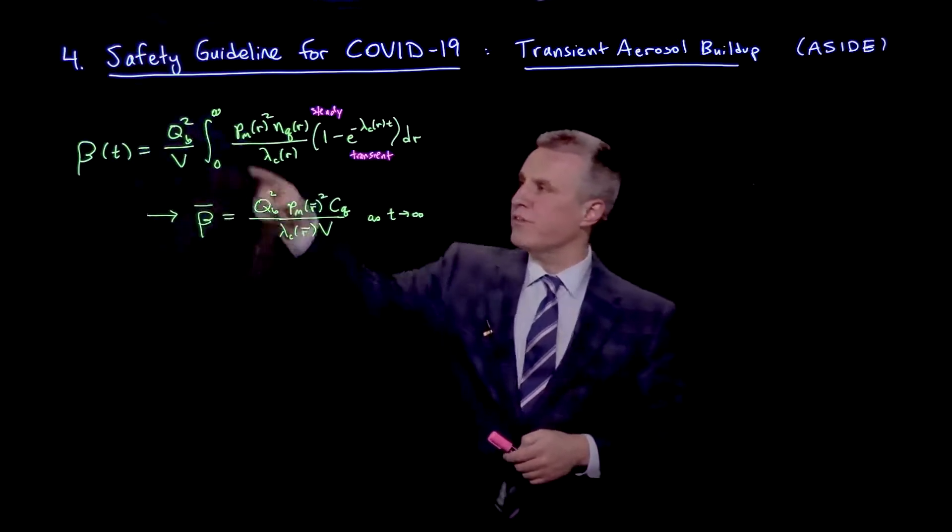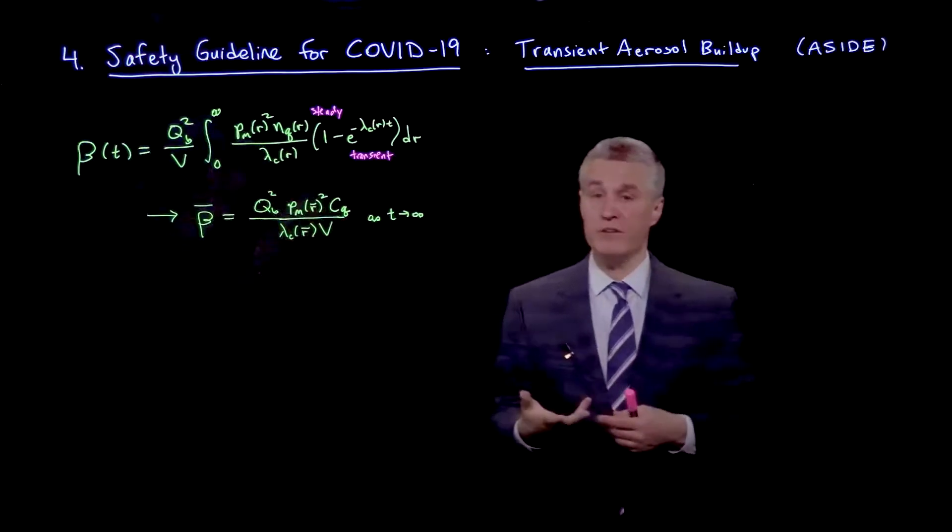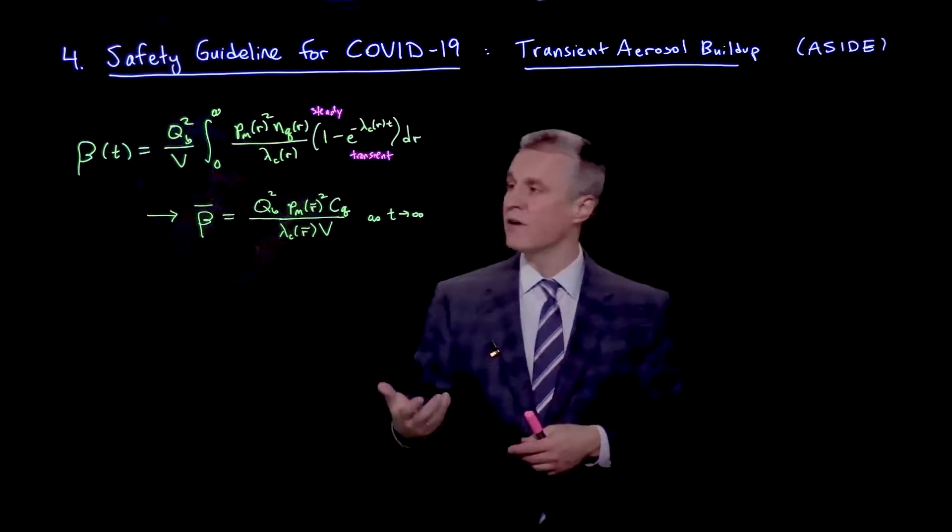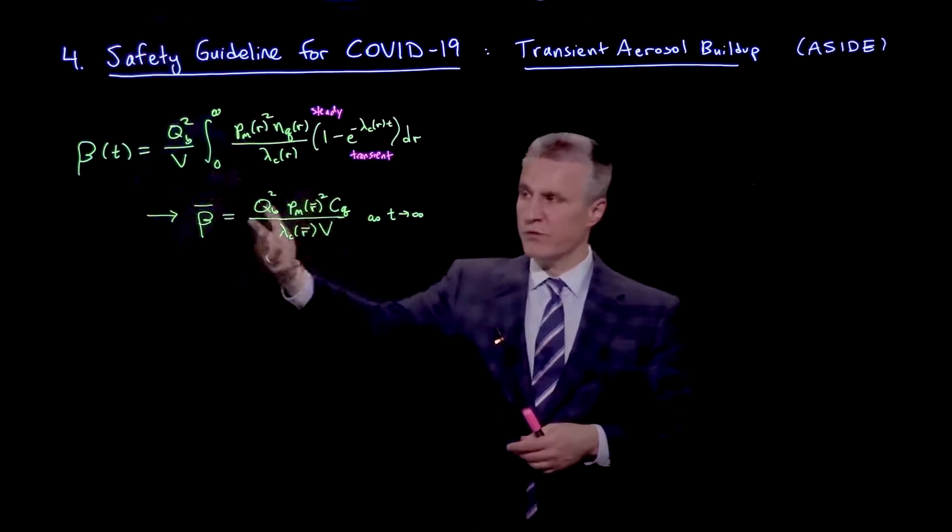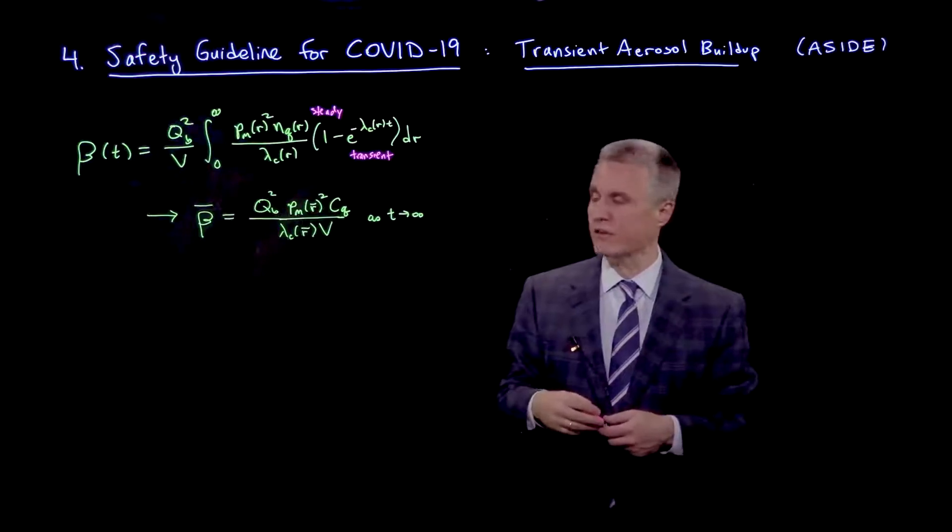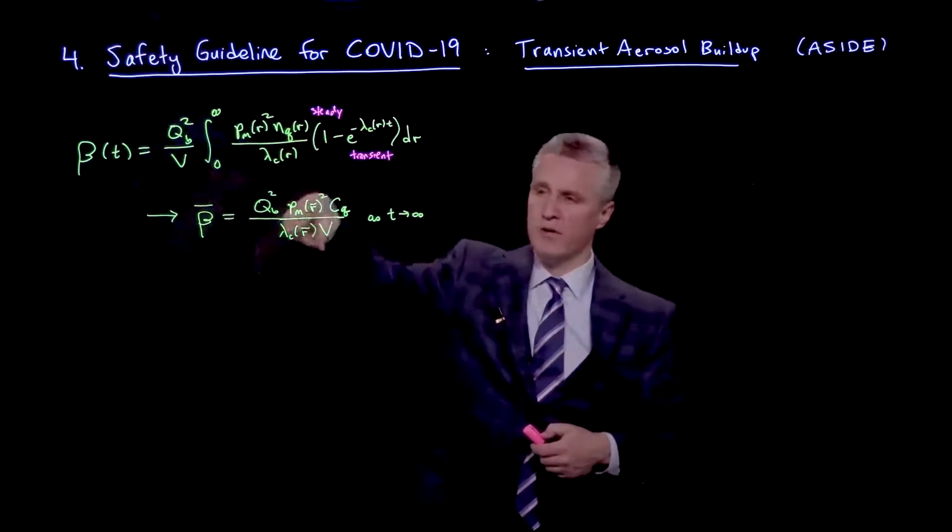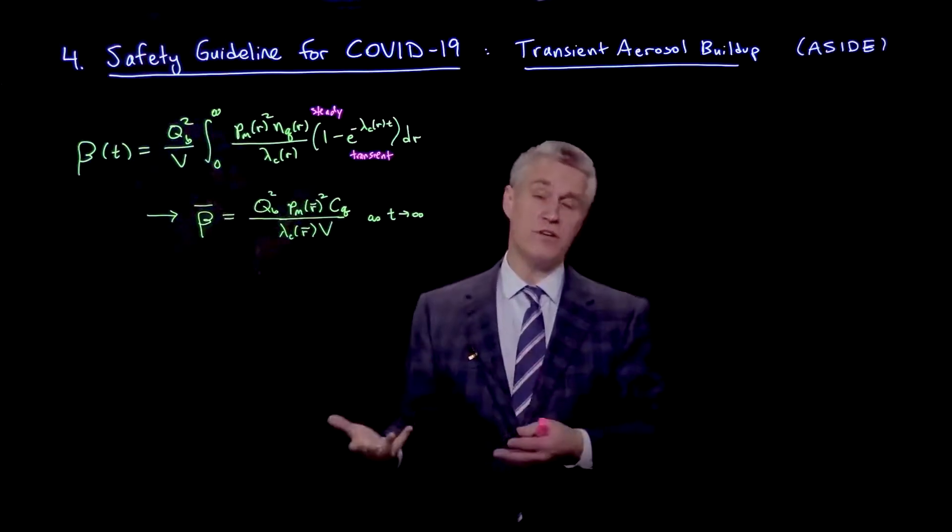And through this definition here, by doing these integrals, we have defined an effective radius r bar, which is sort of where you evaluate the mass transmission factor and also the relaxation rate, in order to make these two values equal. So that's actually our definition of effective radius.